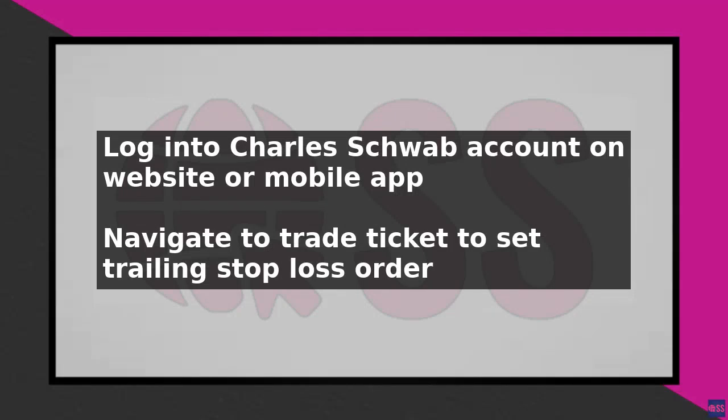To set a trailing stop loss on Charles Schwab, start by logging into your account on the Charles Schwab website or mobile app. Once you are logged in, navigate to the trade ticket by selecting the trade tab and then the stock or option you want to set the trailing stop loss for. You can also access the trade ticket from the portfolio page by clicking on the buy or sell button next to the security.